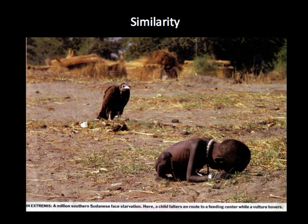Similarity: this photograph is absolutely haunting. The vulture and the starving child actually look quite a bit alike. It's a Pulitzer Prize winner from 1993, called 'The Vulture and the Baby' — probably one of the most famous images to date. The photographer committed suicide three months after taking this photo; no one really knows why, but there's a lot of speculation. This photograph is a play on similarity.